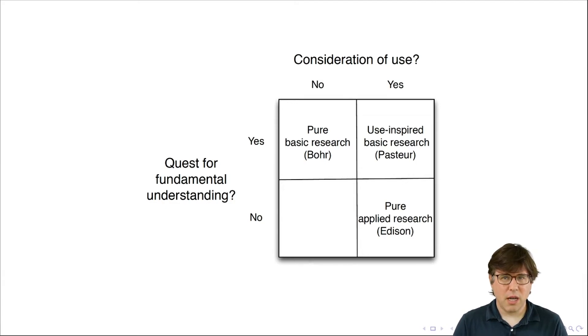And so the idea of Pasteur's quadrant kind of demolishes that and it does it through the example of Pasteur. So Pasteur, as we know, developed the germ theory of disease, which is an important improvement in our fundamental understanding. But he developed the germ theory of disease while he was working in a beet factory, a factory that was trying to turn beet juice into alcohol.